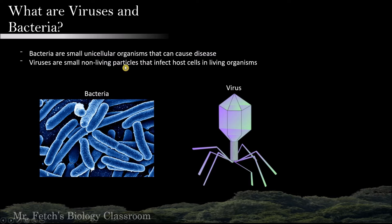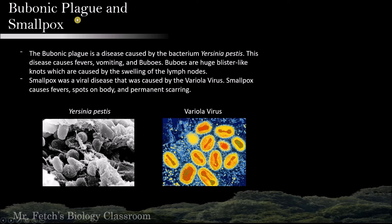Today's topic is about the bubonic plague and smallpox. The bubonic plague is a disease caused by the bacterium Yersinia pestis, and it causes fevers, vomiting, and buboes — huge blister-like knots caused by the swelling of the lymph nodes. Smallpox was a viral disease caused by the variola virus, and it causes fever, spots on the body, and permanent scarring.